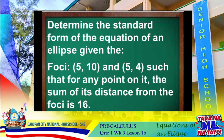We have determined the standard form of the equation of an ellipse given the coordinates of your foci, (5, 10) and (5, 4), such that for any point on it, the sum of its distance from the foci is 16.